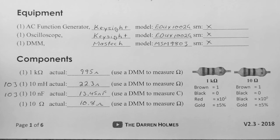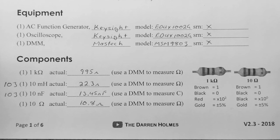I've already gone ahead and measured my components. My 1k ohm resistor is 995 ohms. My 10 millihenry inductor labeled 103 is 22.3 ohms — that's the coil resistance, not the impedance. The 10 nanofarad capacitor, also labeled 103, measured out at 13.45 nanofarads — capacitors have a pretty big tolerance. And the 10 ohm resistor, the closest I could find, measured in at 10.8 ohms, which is going to be the sensing resistor.